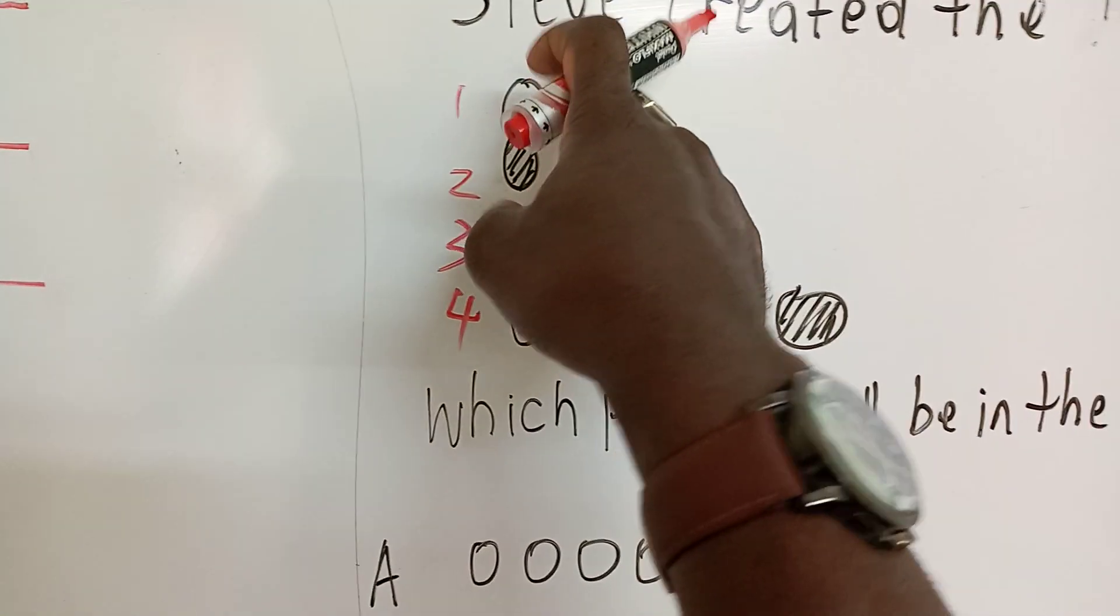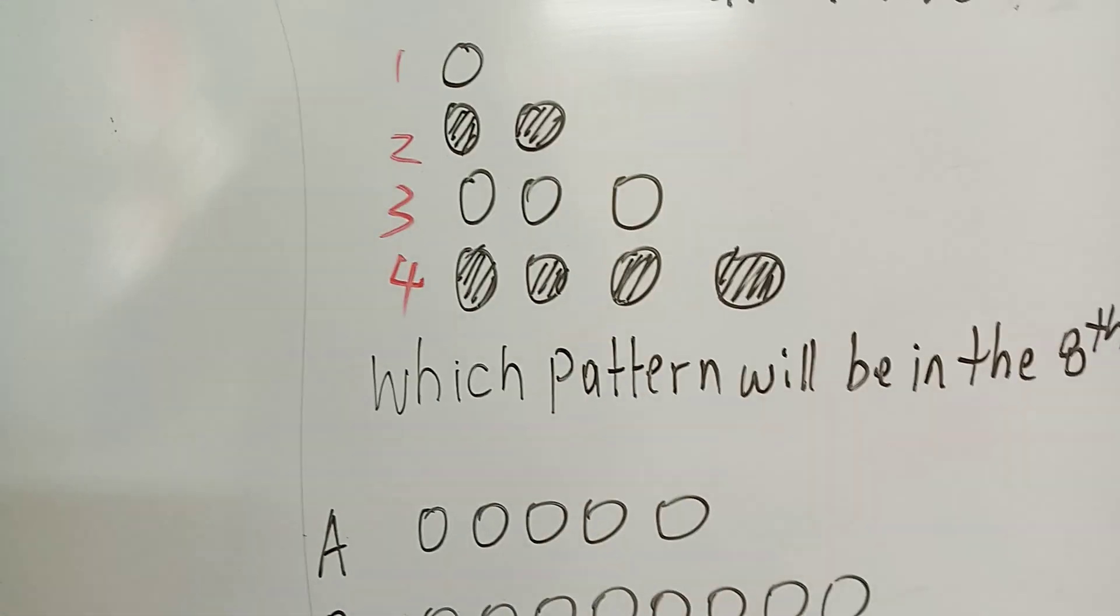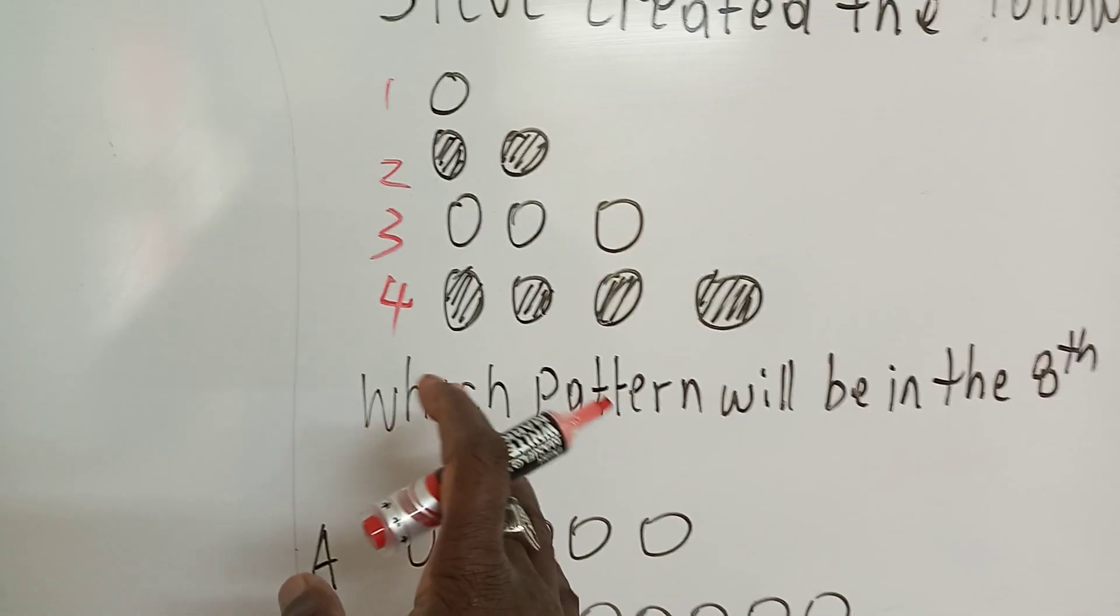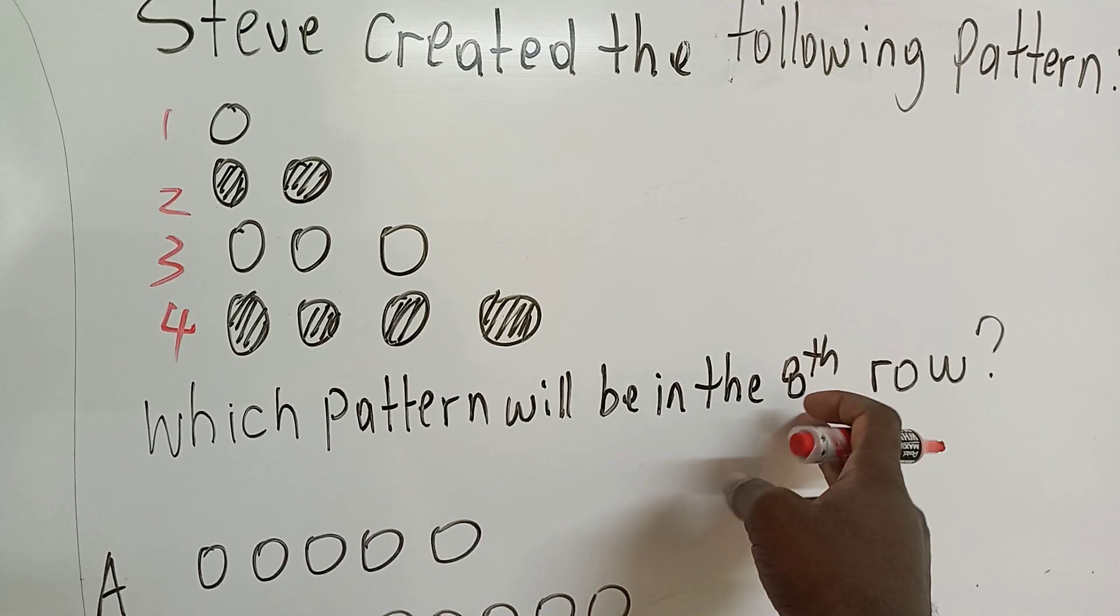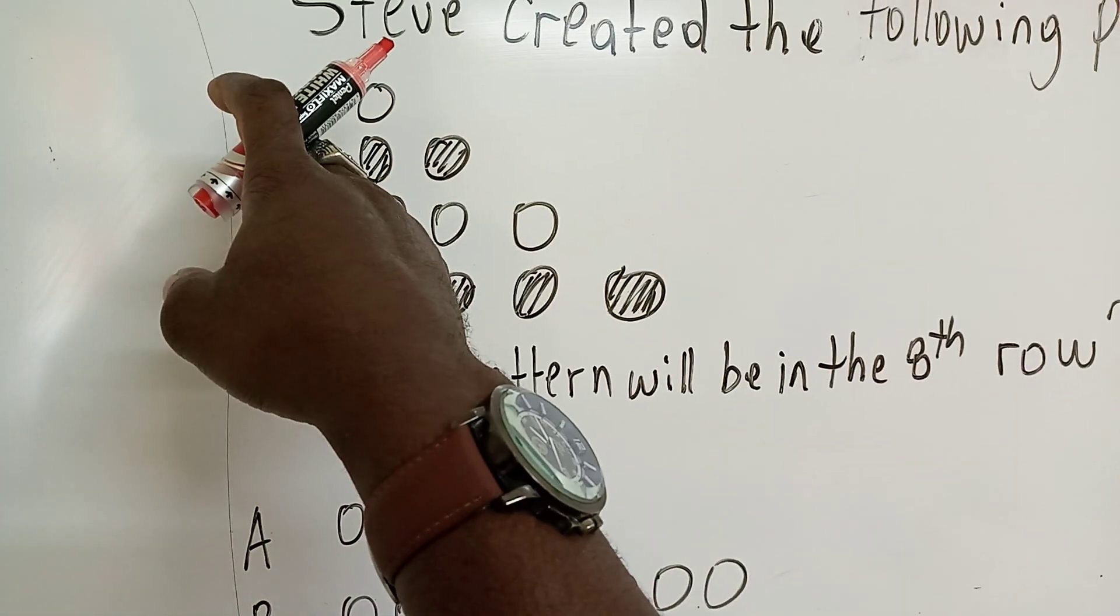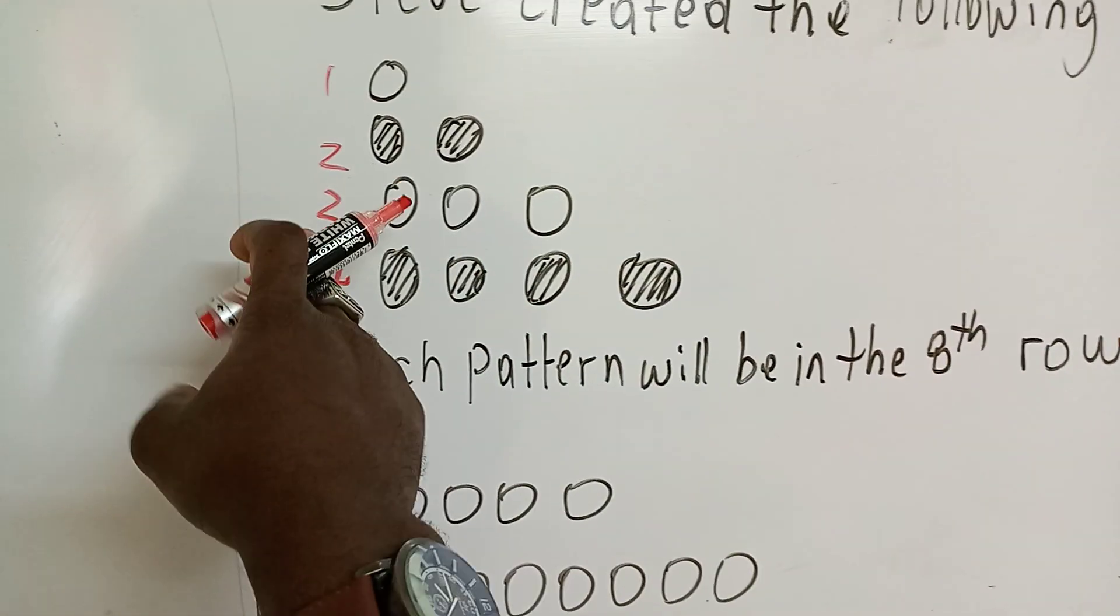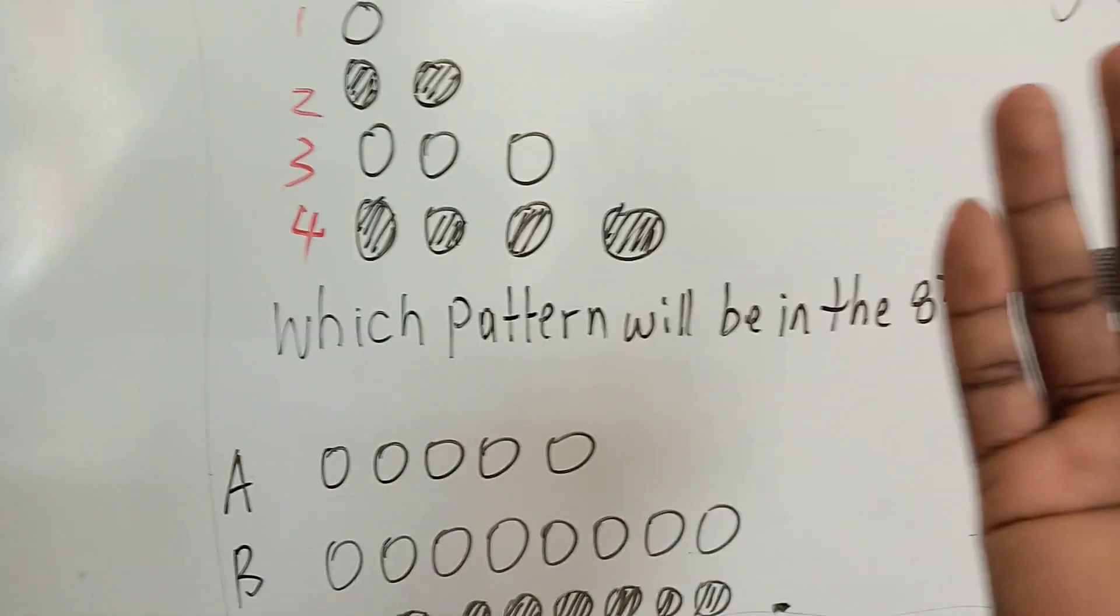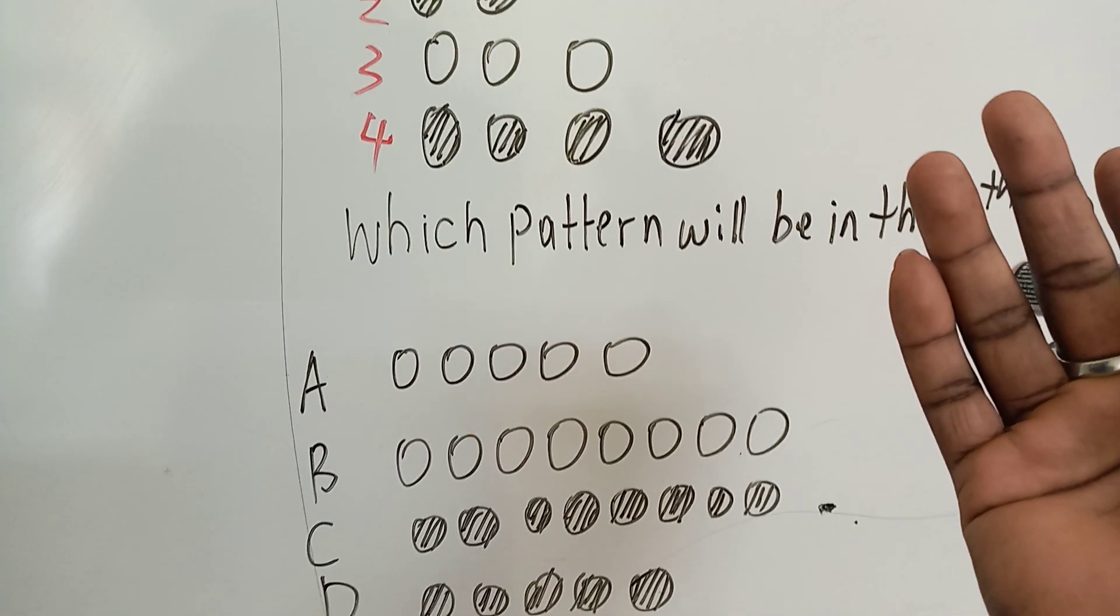Because in the first position, there's one. In the second position, there's two. In the third position, there's three. So we're seeing that, what is the question they're asking us? Which pattern will be in the eighth row? Okay. So clearly, if one is in the first row, three is in the third row, then we could say that eight is going to be in the eighth row.